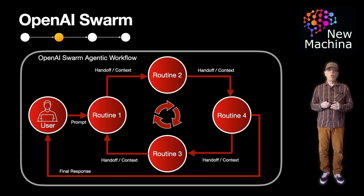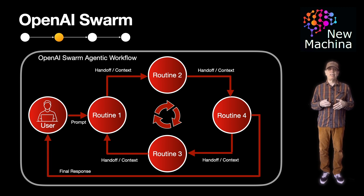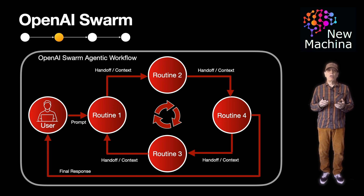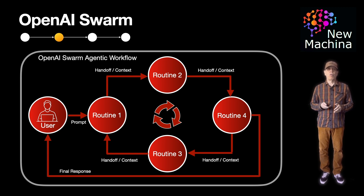One of Swarm's clever mechanisms is its handoff system. If one agent hits a task it can't handle, it can hand off that task to another agent that is better suited. It's like calling a teammate who's better at a specific skill.